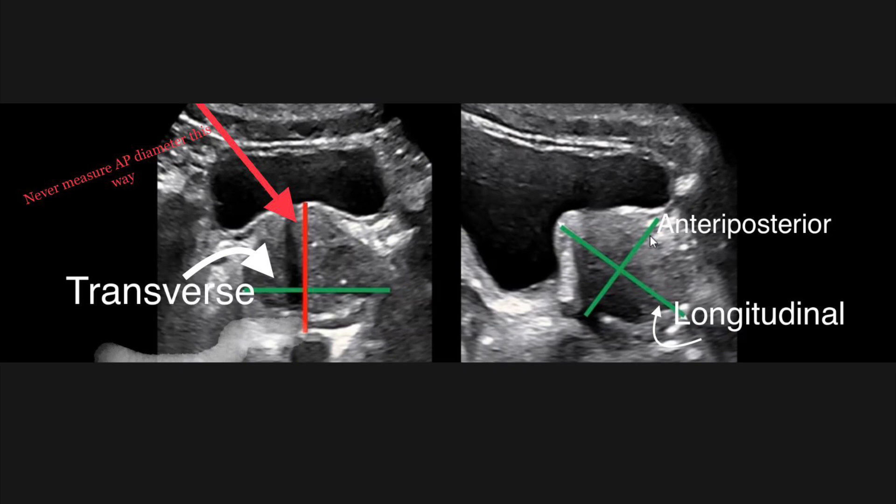For measuring the prostatic volume on ultrasound, first obtain the transverse view of the prostate, and then rotate the probe clockwise to obtain the longitudinal view of the prostate. Here is the transverse view in the first image and the longitudinal view of the prostate in the second image.